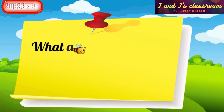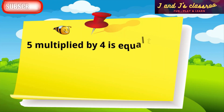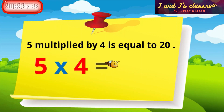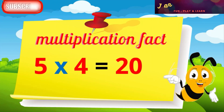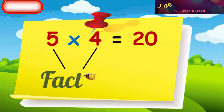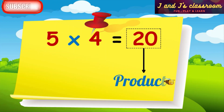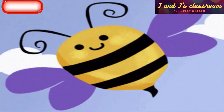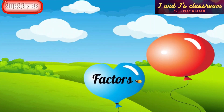Now let's learn what are fact, factors, and product. See this statement: 5 multiplied by 4 is equal to 20, which means 5 cross 4 is equal to 20. This kind of format that you write is called a multiplication fact. Here, 5 and 4 are the factors of multiplication. Then, 20 is the product of multiplication. I hope now you understand well about fact, factors, and product.